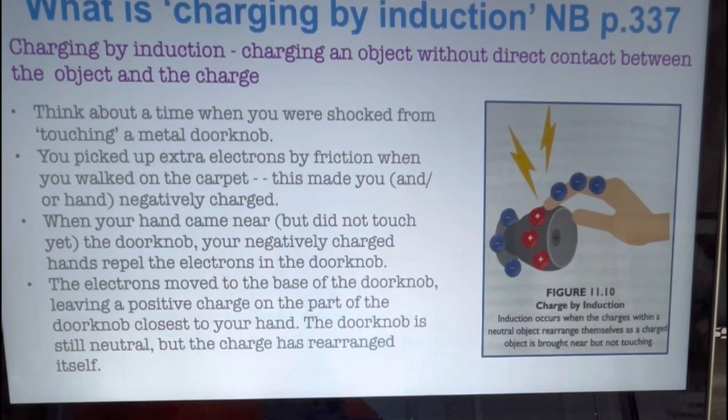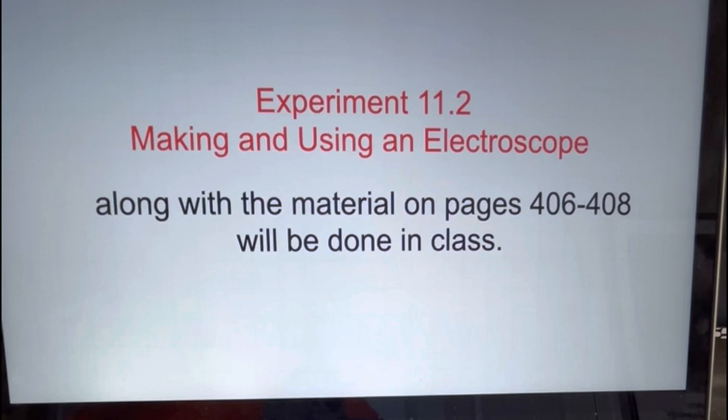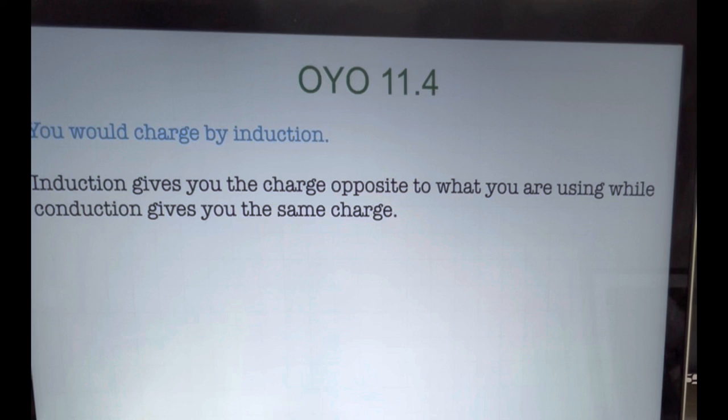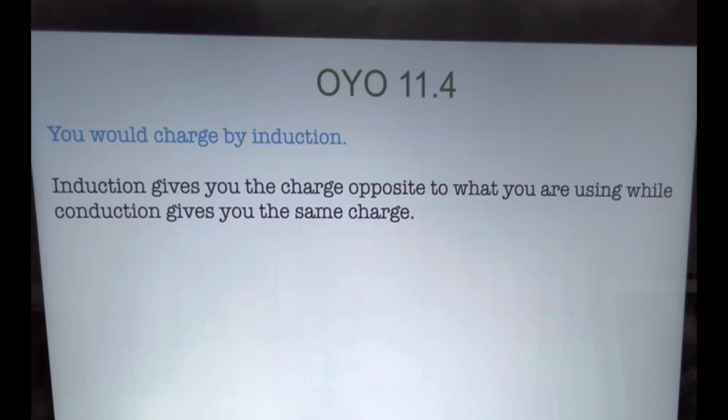Experiment 11.2 — making and using an electroscope — as well as the supporting material on pages 406, 407, and 408, will be done in class. On your own: if you want to give an object a positive charge but the only source of charge you have is negative, would you charge the object by conduction or induction? You would definitely charge by induction. Induction gives you the charge opposite to what you are using, while conduction gives you the same charge.